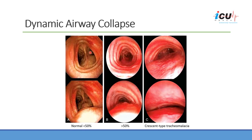Excessive dynamic airway collapse is caused by excessive bulging of the posterior membrane. This leads to greater than 50% reduction in airway lumen during expiration compared to inspiration.